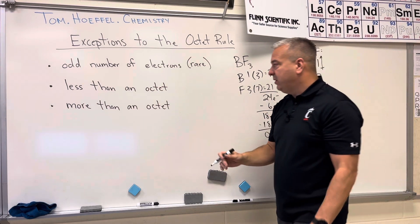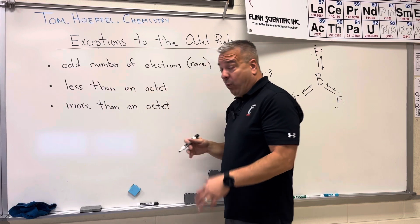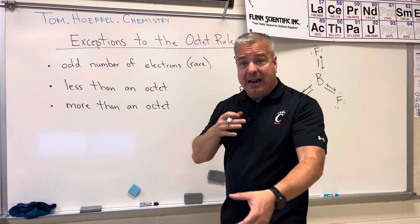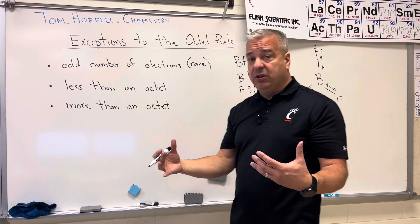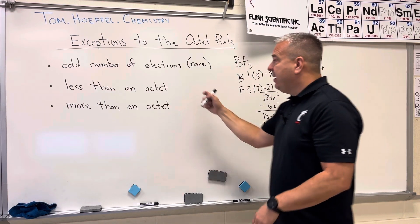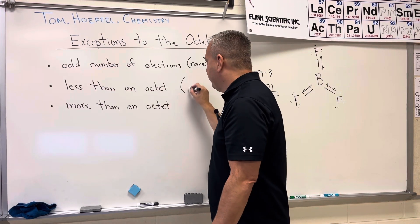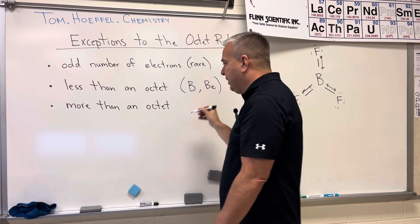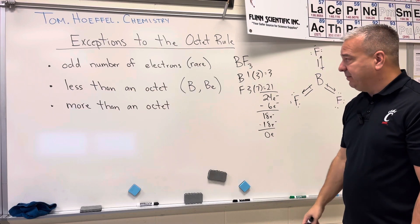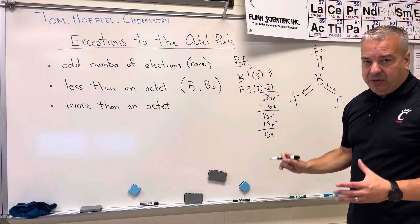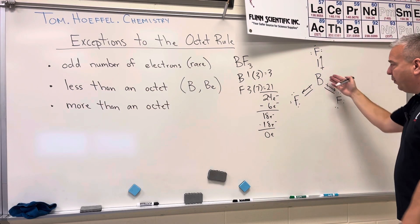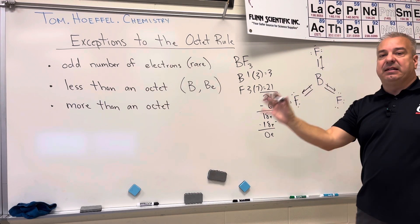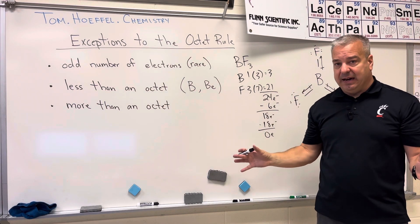The way I help my students remember when this can happen: less than an octet typically applies to elements like boron or beryllium when they're covalently bonding. That's the rule I use in my class — if you've got boron bonded to something that's very electronegative, it's okay to have less than an octet.